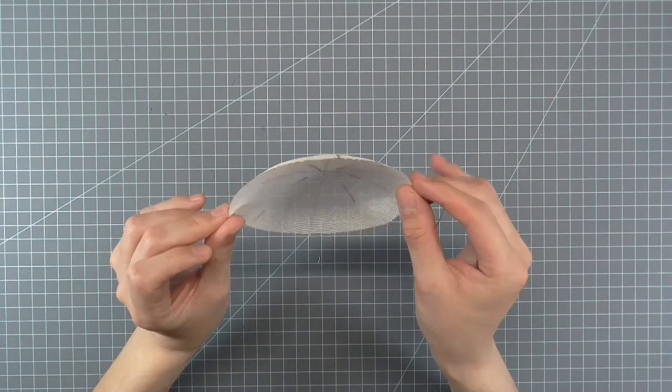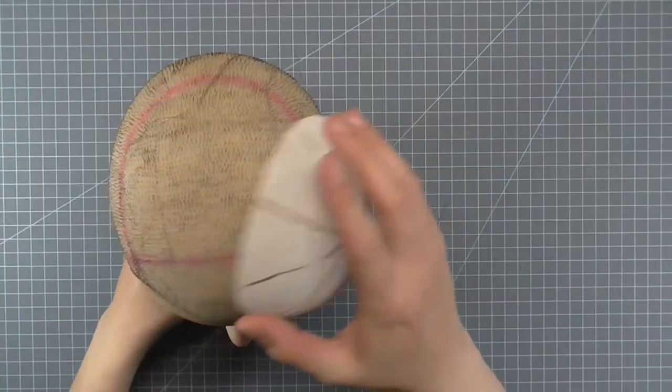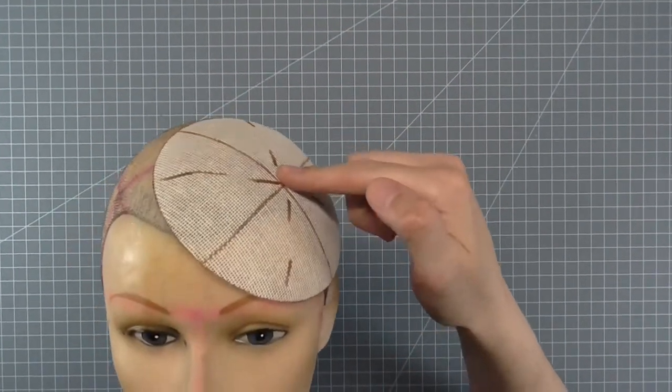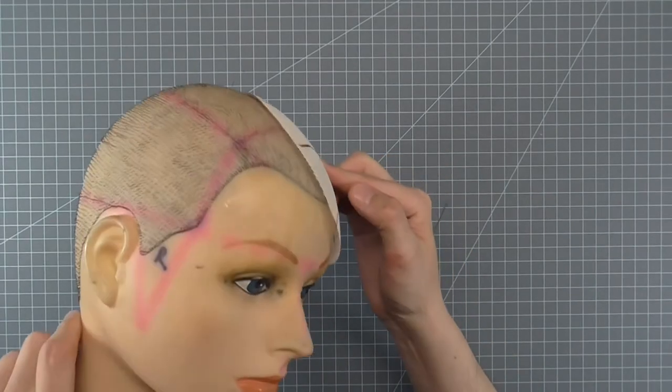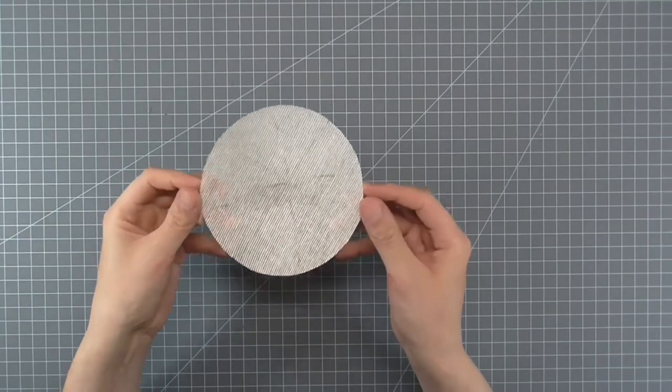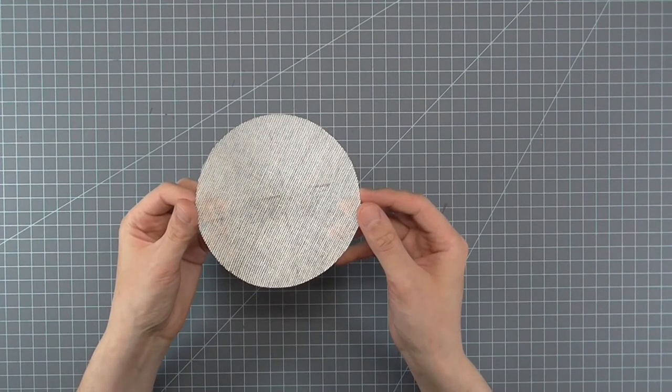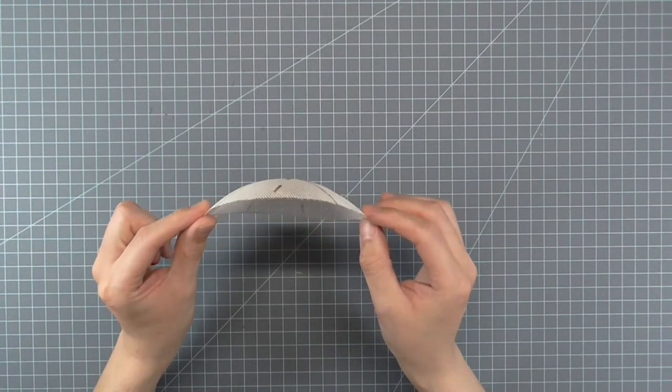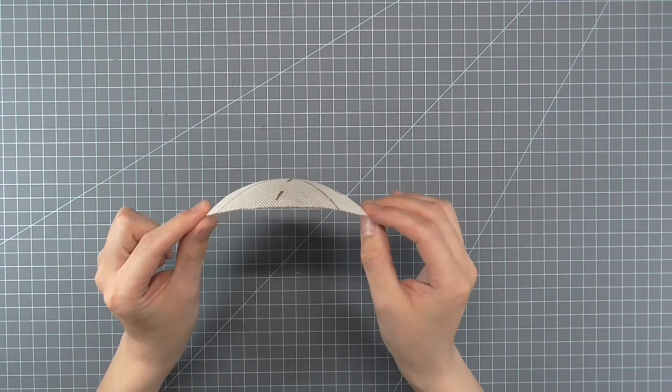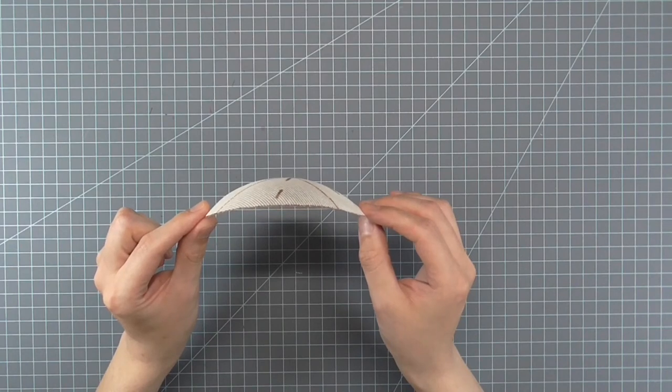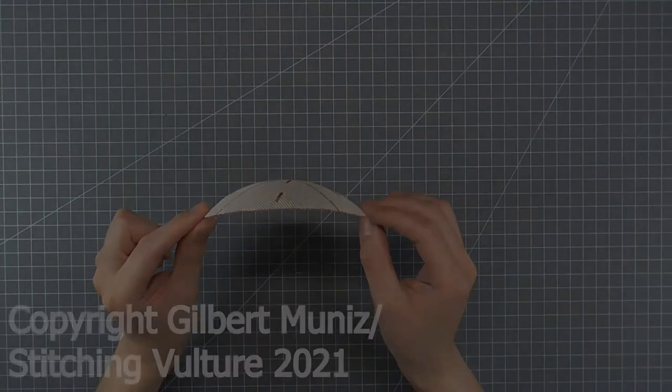And that's it! You now have a Buckram base that can be wired and covered. The shape contours to the head or it can be elevated off the head with wire supports. In the next video, I'll demonstrate how to cover the base and attach it to a headband. There is one more step you can do before you wire the edge. That will be covered in the next video. I hope you've enjoyed this video. If you have any questions, ask in the comment section and look forward to more millinery and design videos in the future.